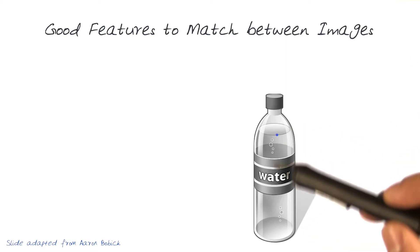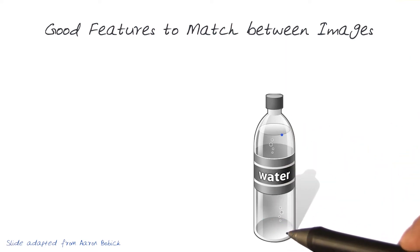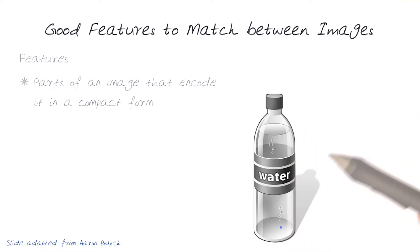I'm going to use this simple object of a water bottle to help us illustrate this. As I've said before, we're interested in extracting features. We want to find parts of an image that let us encode that image in a compact form so we can do comparisons from one image to the other.